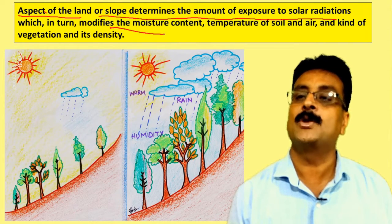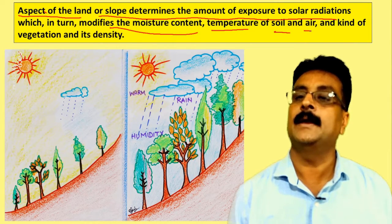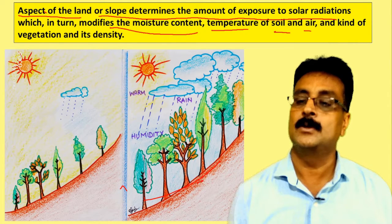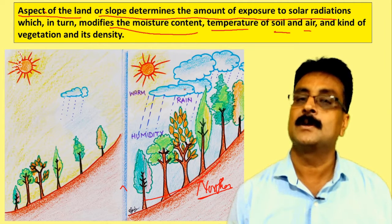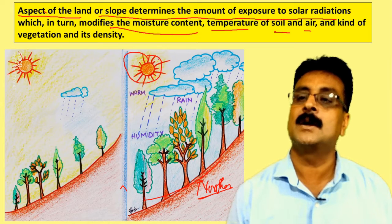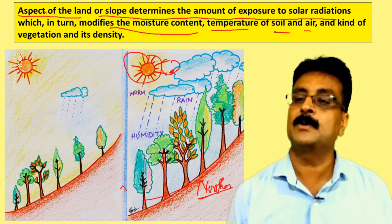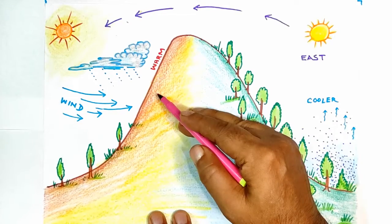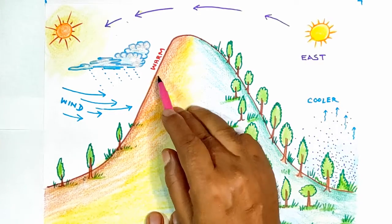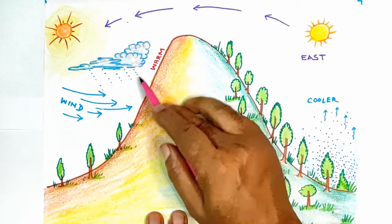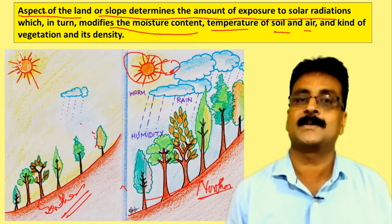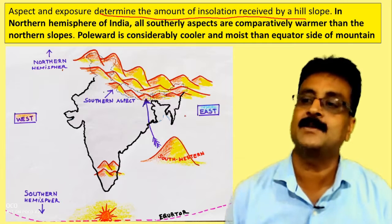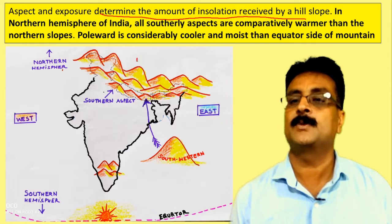The aspect of the land or slope determines the amount of exposure to solar radiation, which in turn modifies moisture content, temperature, soil, and air. This determines the vegetation and density. For example, a northern aspect is generally cooler and moister, while a southern aspect is generally warmer. As foresters we need to understand this carefully, especially in the northern hemisphere.